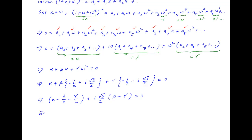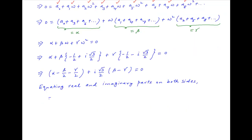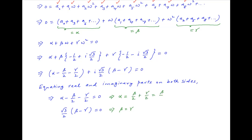Equating the real and imaginary parts on both sides, we get alpha minus beta upon 2 minus gamma upon 2 is equal to 0, and root 3 upon 2 times in brackets beta minus gamma is equal to 0. The second equation implies that beta is equal to gamma. Using this in the first equation, we get alpha is equal to beta upon 2 plus gamma upon 2, which equals beta, since gamma equals beta. Therefore alpha is equal to beta is equal to gamma.